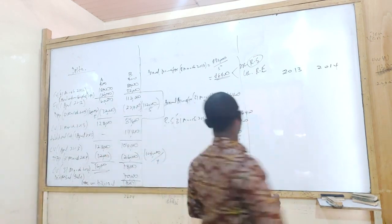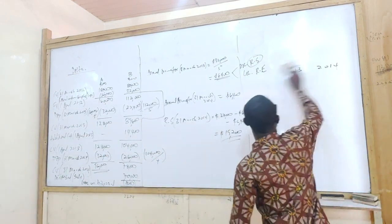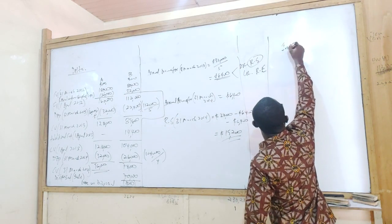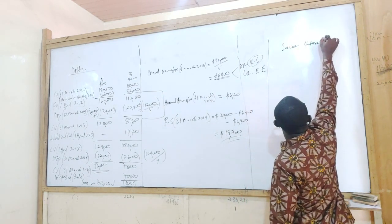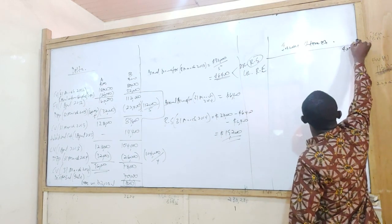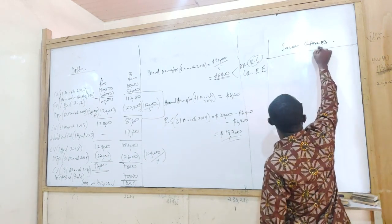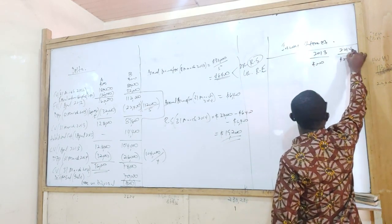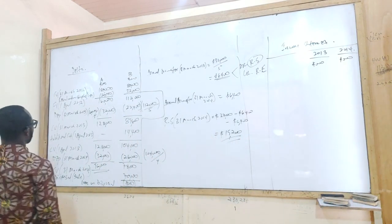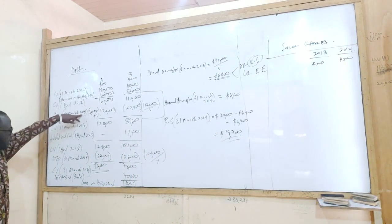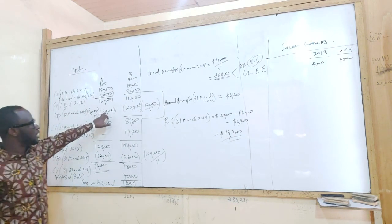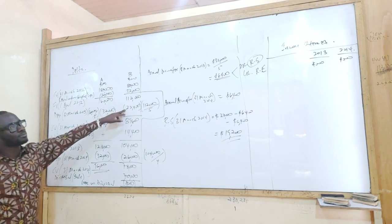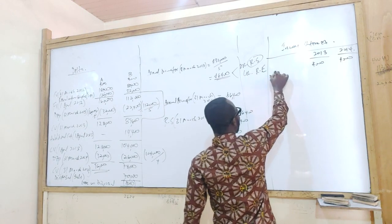Now let's go to the financial statements and put it all together. In our income statement in columnar form, we have 2013 and 2014. What do we bring? For 2013, we're bringing the depreciation — we add the two figures together. So for 2013, 32,000 plus 22,400 = 54,400.